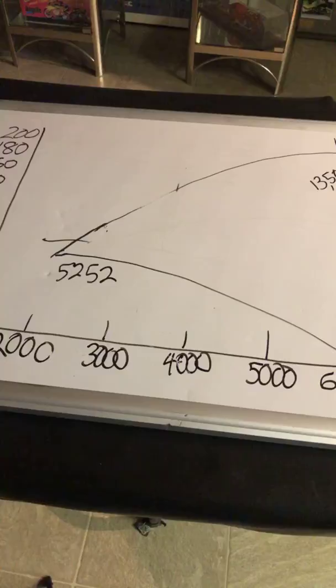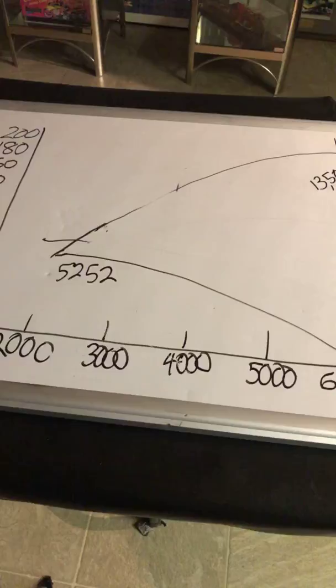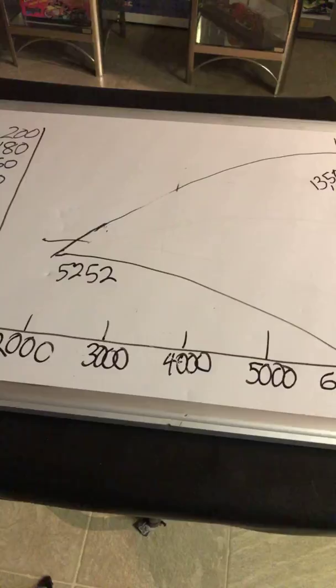Anytime you dyno it — I don't care where you get it dynoed, at my biggest competitor's shop or my best friend's shop — they make the same number. If that engine makes 100 horsepower at 5,252, it makes 100 foot-pounds at 5,252. It's an inevitable, unavoidable fact. So if you get that in your mind, then you can understand why there's such an opportunity for our Harley clients to get horsepower beyond 5,252, or more horsepower below 5,252. But you can't have one without the other — you have to have the torque in order to make the horsepower.